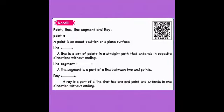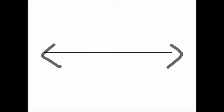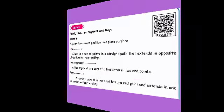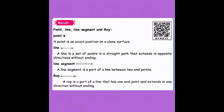The next one is a line. A line is a set of points in a straight path that extends in opposite directions without ending. On a plane surface, if you draw a line that extends indefinitely in both directions, we identify that with arrow marks on both ends. Those arrow marks represent that it extends indefinitely in both directions. This is called a line.